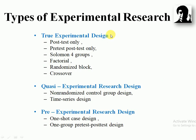The types of experimental research design are: true experimental research design, quasi-experimental research design, and pre-experimental research design. True experimental research design includes post-test only design, pre-test post-test design, Solomon four-group design, factorial design, randomized block design, and crossover design.